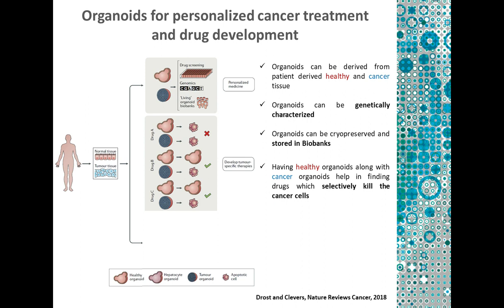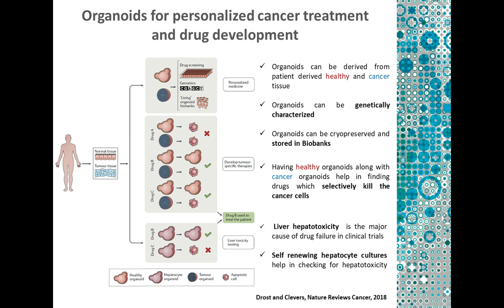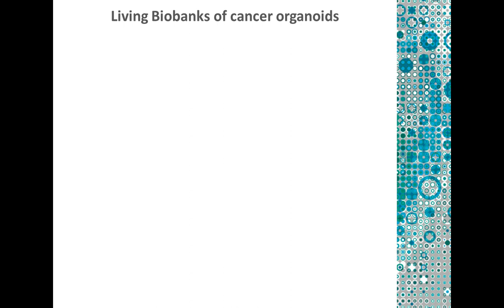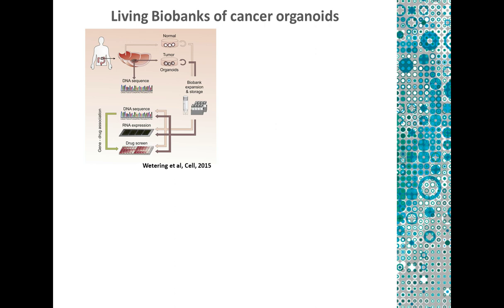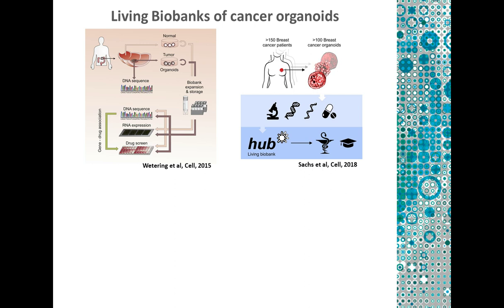Living biobanks of cancer organoids have been developed. The first living biobank developed in our lab was the colorectal cancer biobank. Recently we have also developed a breast cancer organoid biobank from 150 patient samples. Different types of cancers have been created as biobanks and are available for testing. Recently in our lab, we have also developed the human airway organoid system, which can be used for both cancer and cystic fibrosis modeling. These carry all the cell types: the basal cells, the club cells, and the ciliated cells. We are also developing a lung cancer biobank for testing different kinds of drugs in the future.